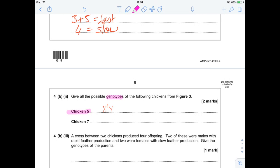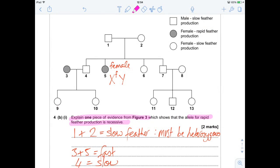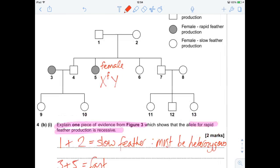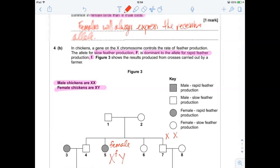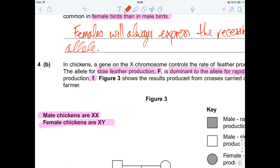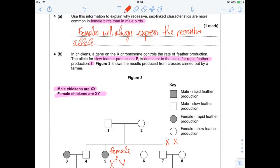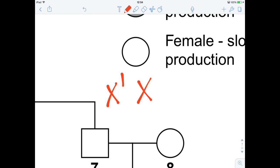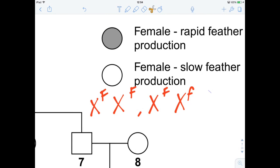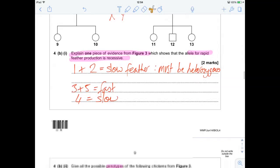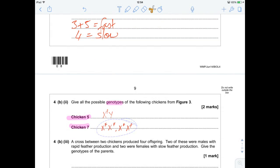Let's have a little look at chicken 7. So he is a male, so he's going to be XX. And he is a slow feather producer. Slow feather producer is capital F. So he can either have homozygous dominant, or he could also be heterozygous. Those are our possible genotypes for our male chicken here. Fantastic.